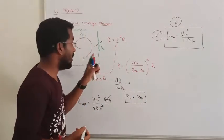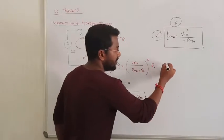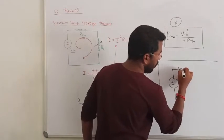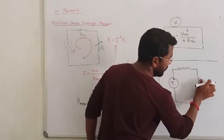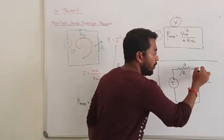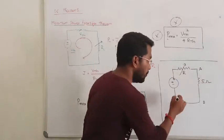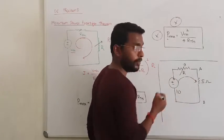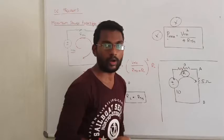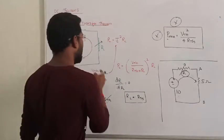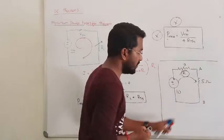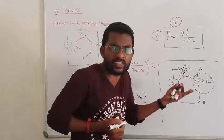Consider a circuit with a source and a 5 ohm fixed load resistance, with a variable internal resistance R. The question asks: find R so that maximum power is transferred to the 5 ohm load. Maximum Power Transfer Theorem deals with variable load, not variable source resistance, so blindly applying the theorem here would be wrong.